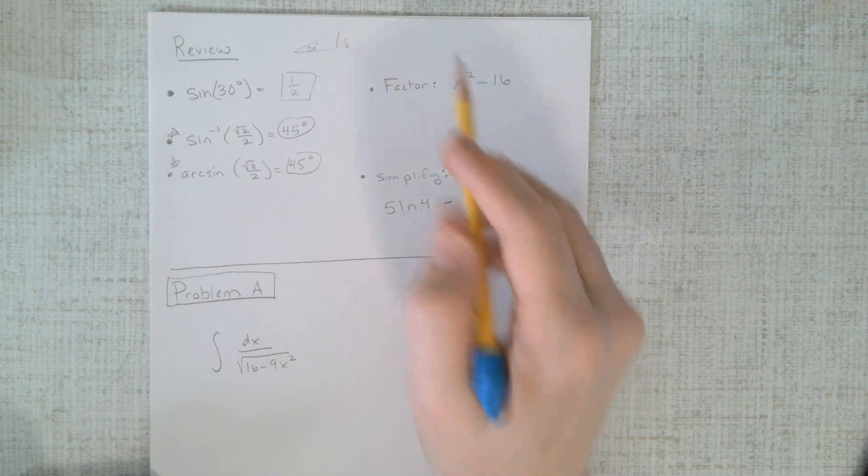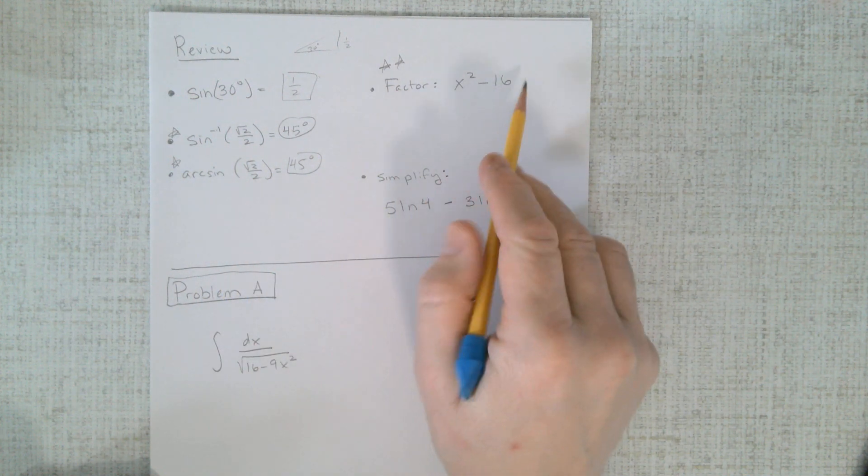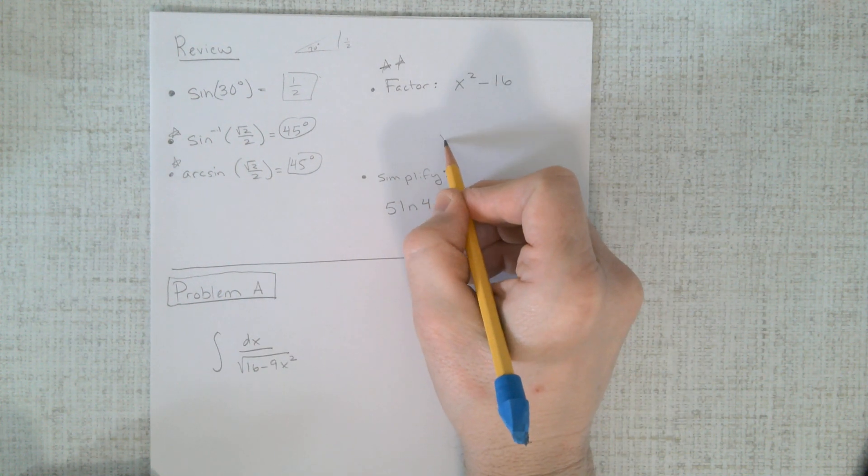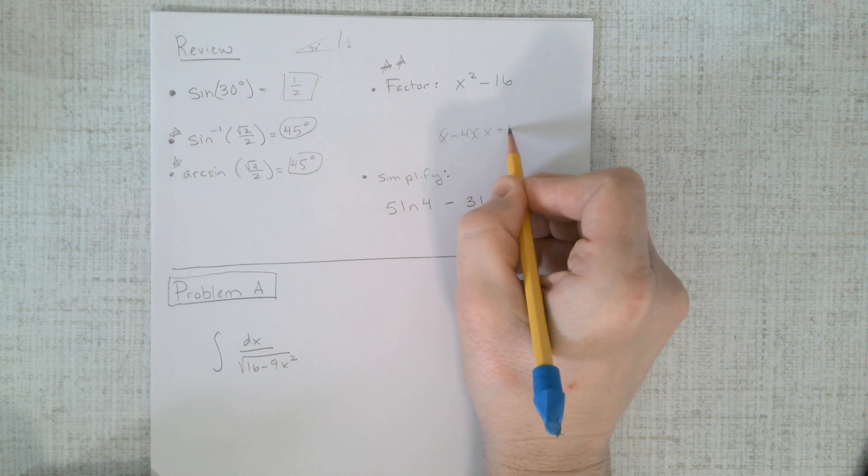Another skill you're going to need today, a huge one. This is probably the most important thing for today. Factoring something like this. Well, most of us know that's rather easy, right? That's just x minus 4, and that's x plus 4.